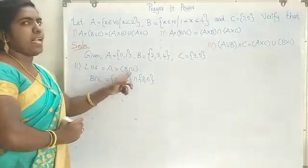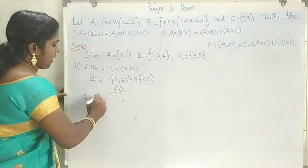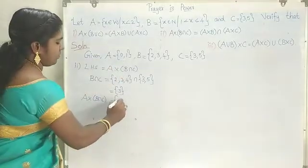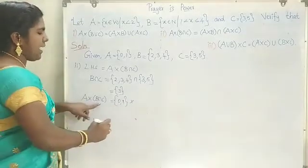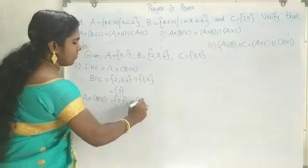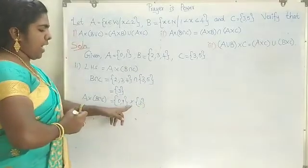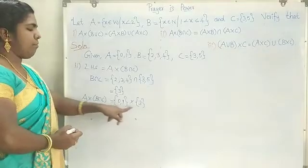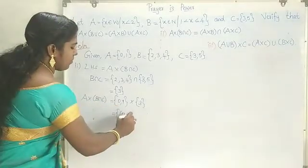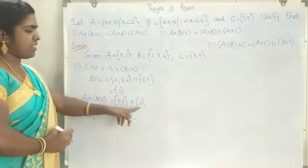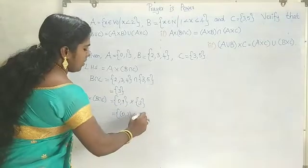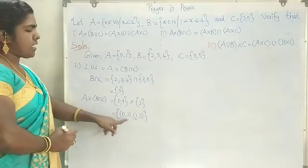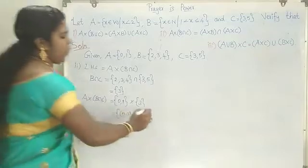Now we find A cross (B intersection C). A is {0, 1} and B intersection C is {3}. For the cross product, we write the numbers as ordered pairs. Pairing each element of A with each element of B intersection C gives us: (0,3) and (1,3). Therefore, A cross (B intersection C) is equal to {(0,3), (1,3)}. This is equation number 1.